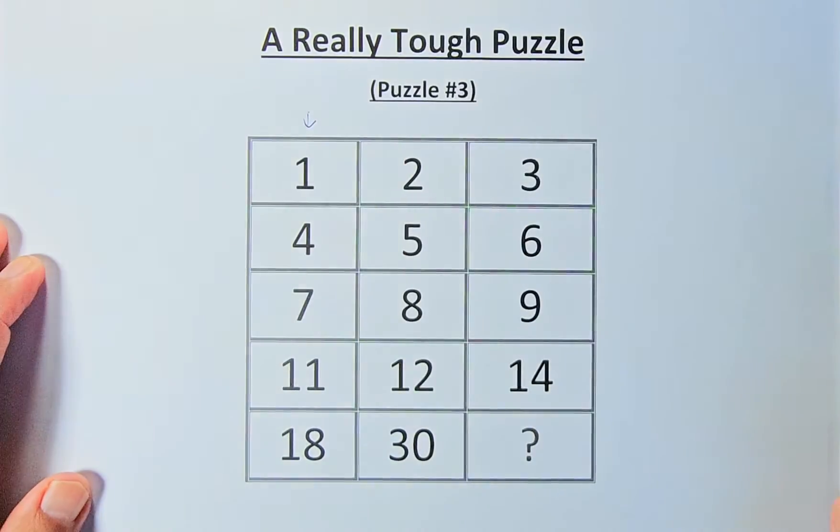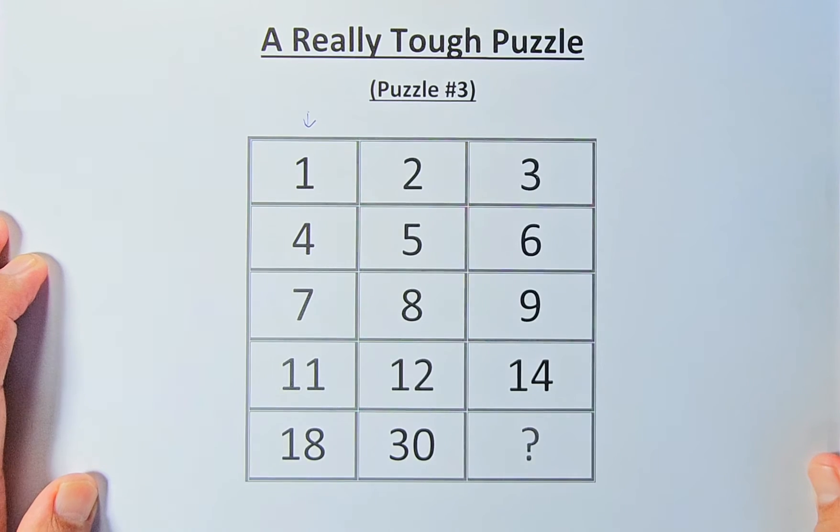We need to use 1, 4, 7, 11 to give the answer 18, and 2, 5, 8, 12 to give 30. Then we can find the answer for the question mark based on 3, 6, 9 and 14. Let's work out the first column.